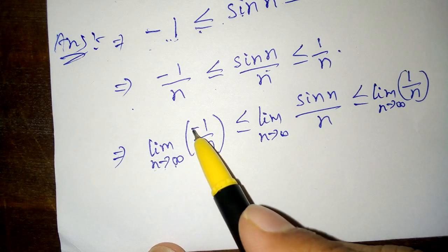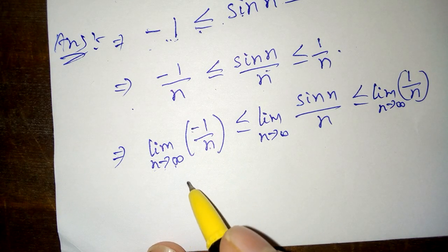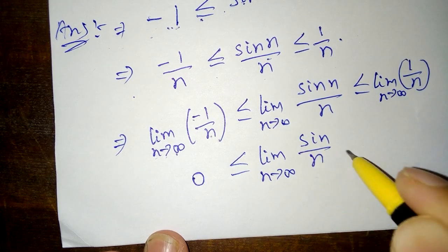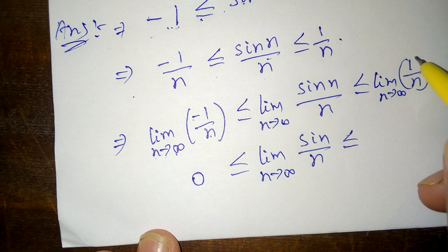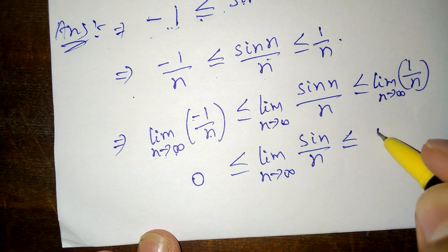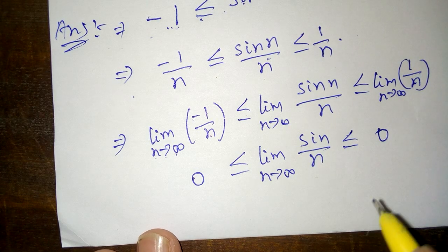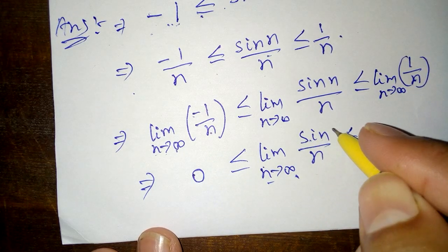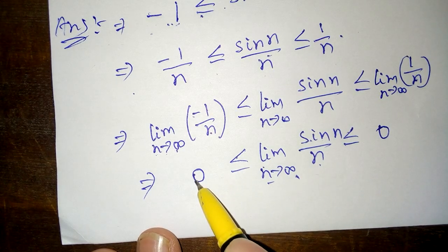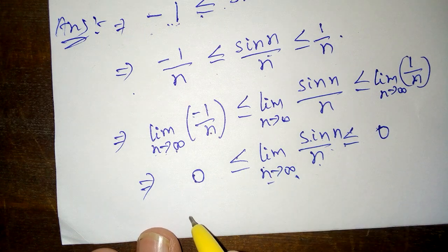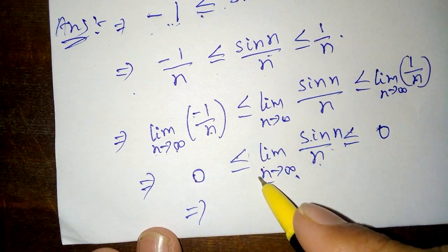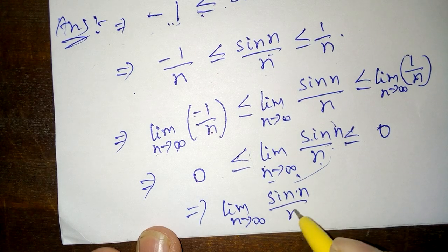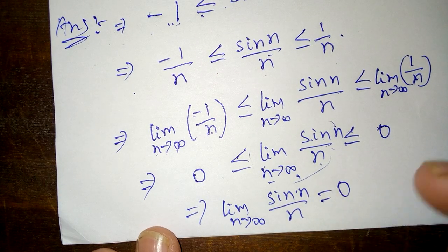The limit as n tends to infinity of −1/n equals 0, and the limit as n tends to infinity of 1/n also equals 0, since 1/infinity equals 0. So we get: 0 ≤ limit of sin n / n ≤ 0. This means the value must be 0. Therefore, the limit as n tends to infinity of sin n / n is equal to 0. This result is by the Sandwich Theorem.